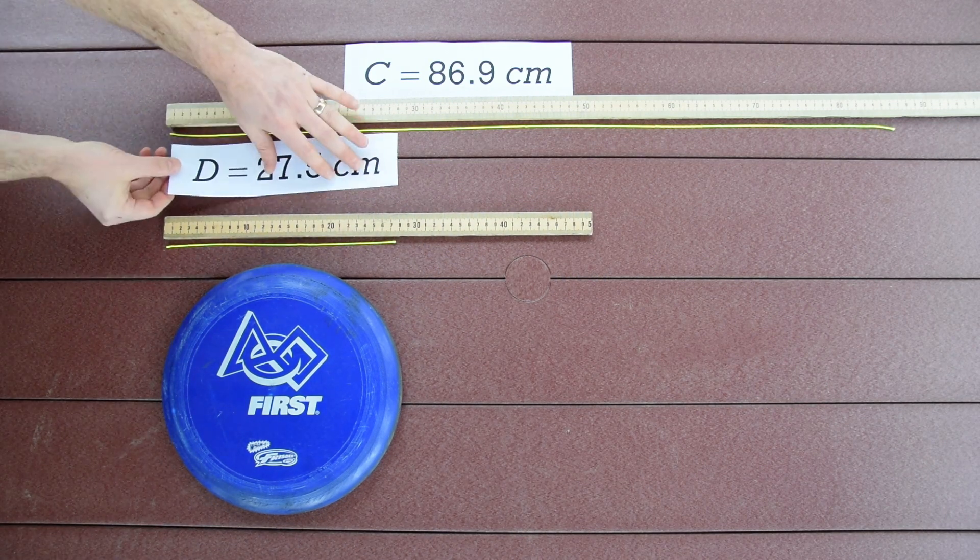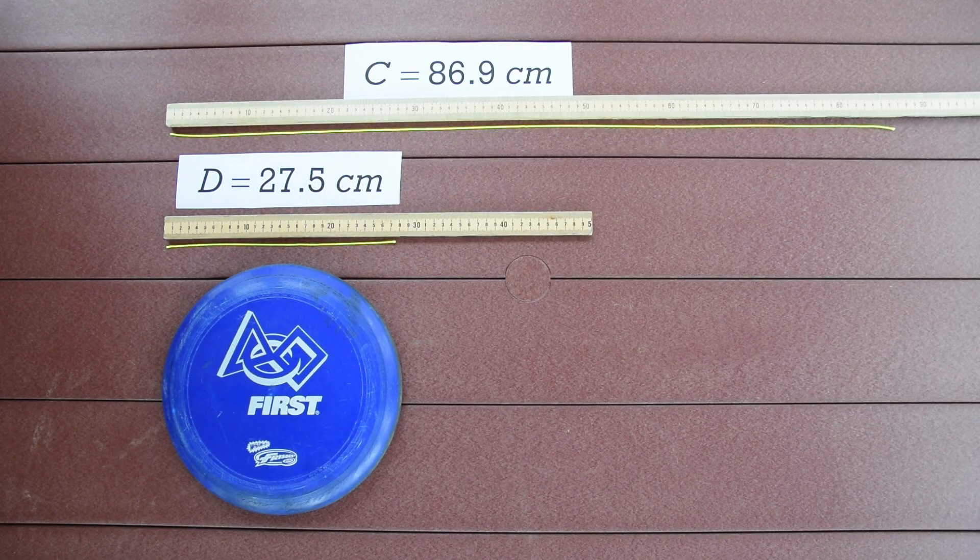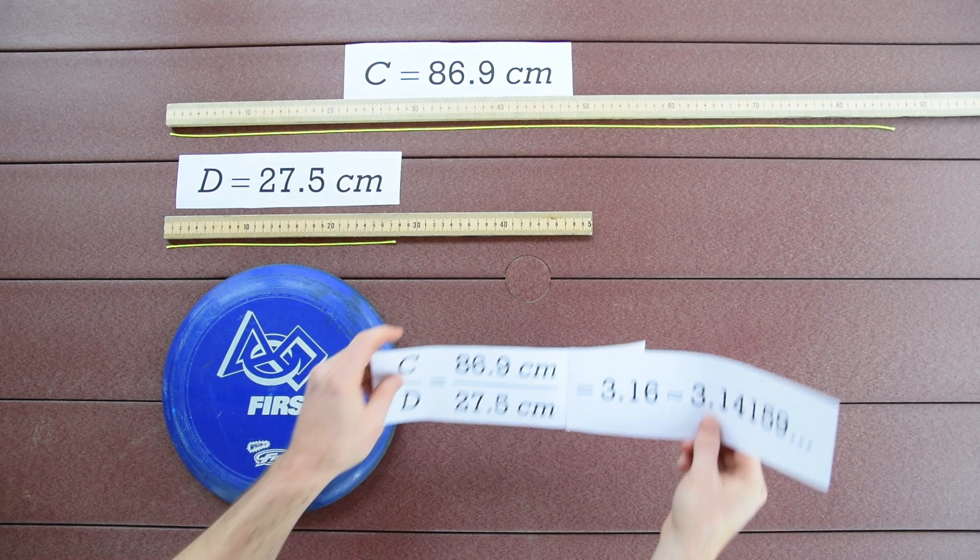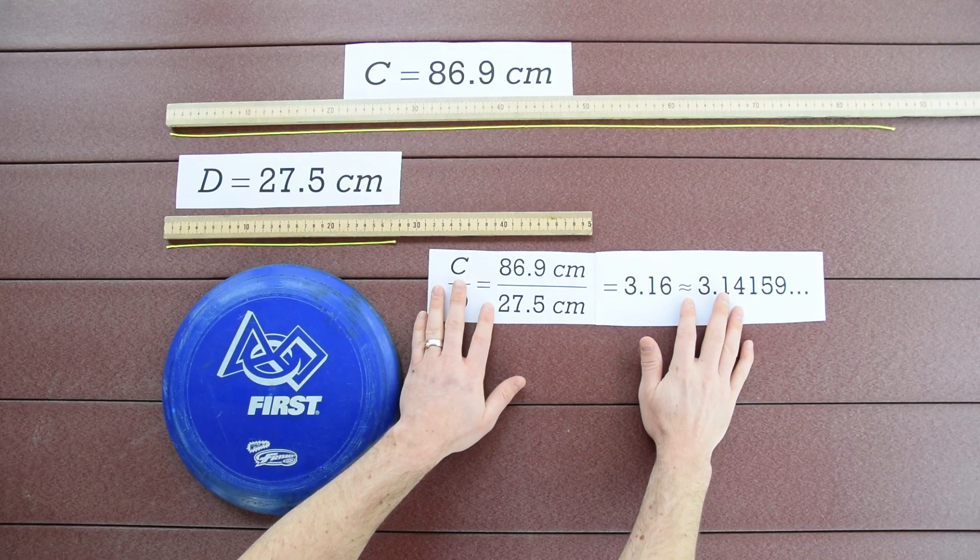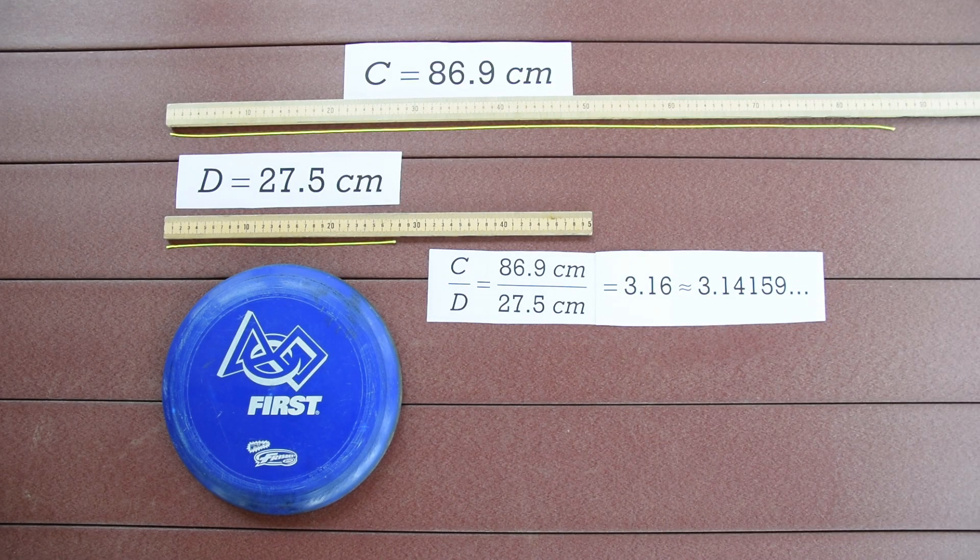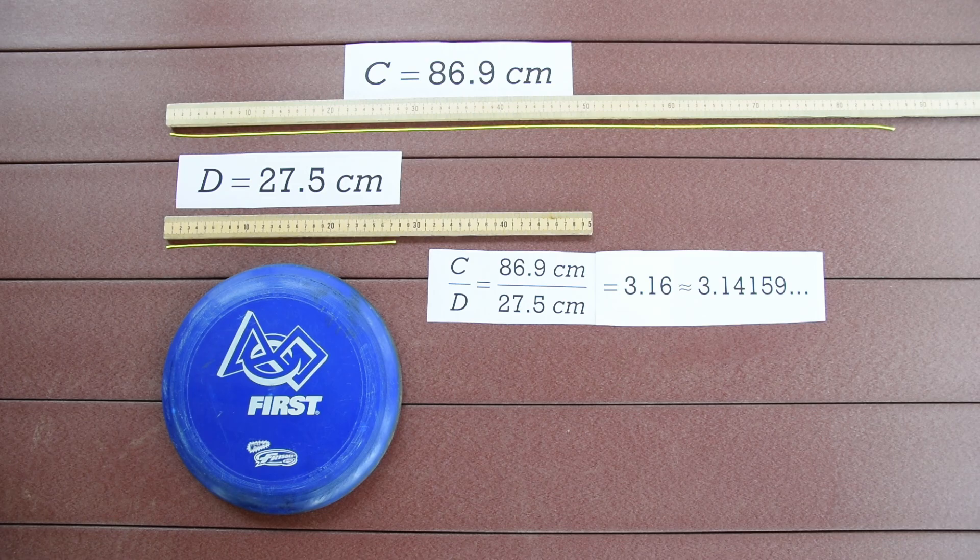which I measure to be 27.5 centimeters. When we divide the circumference, 86.9 centimeters, by the diameter, 27.5 centimeters, we get the number 3.16, which is very close to the number pi.